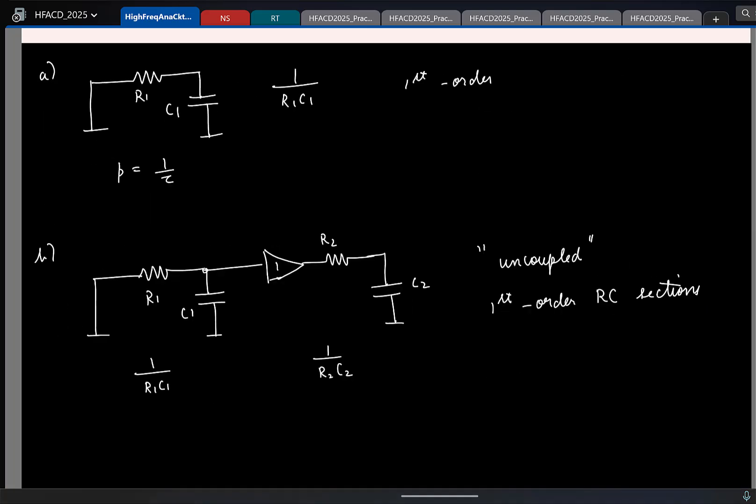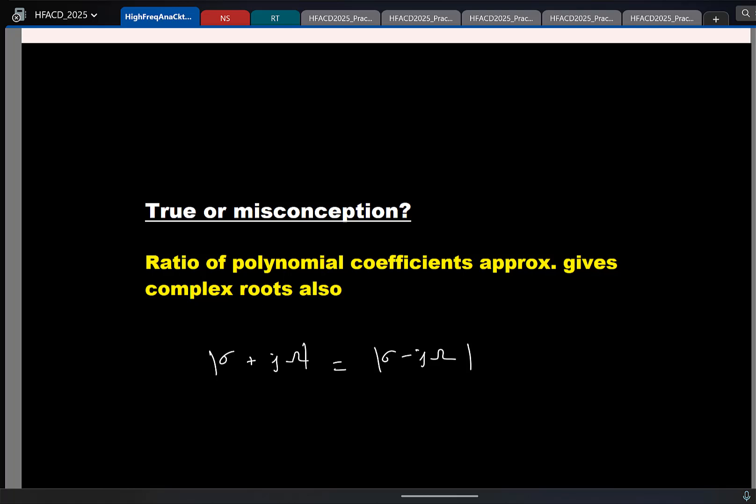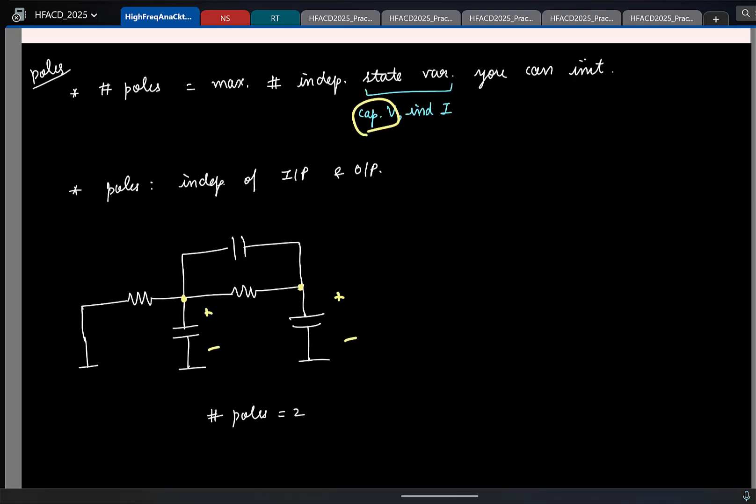Remember the number of poles in your circuit is the maximum number of independent capacitor voltages you can initialize and poles being a characteristic of a particular system, it has no bearing to what is the input and where you take the output term.